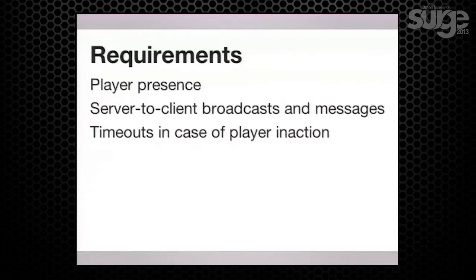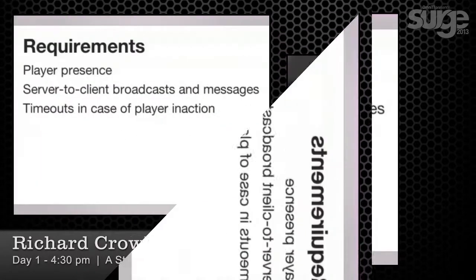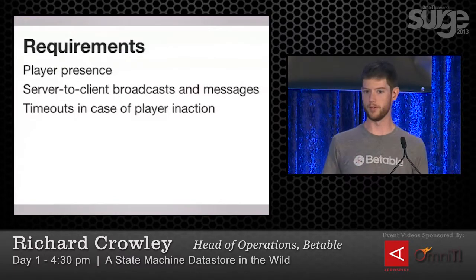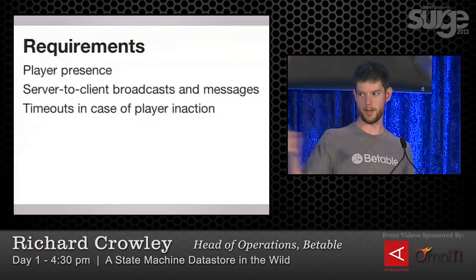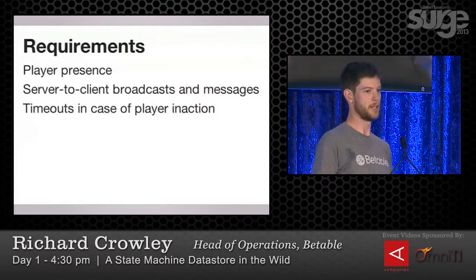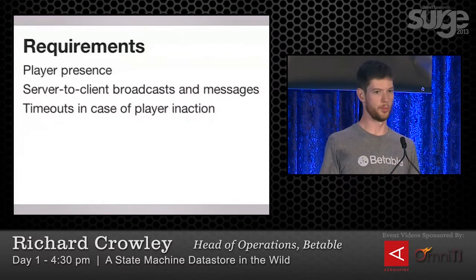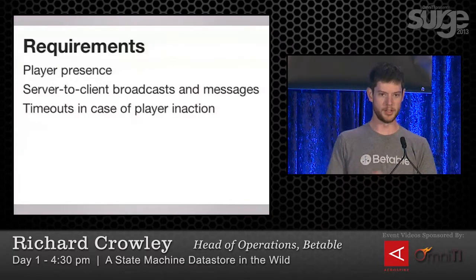We started distilling this down to requirements. The big ones were that we needed some notion of player presence, which we didn't have before. When you're making REST calls, it doesn't matter whether your phone is on the network, but now we need to know if you've left the table so we don't send you events about other players winning. If you're still at the table, we need to alert you when betting opens, when it closes, and what the outcome was. There are server-sent events that are both broadcast — like 'the round is over and the result was seven' — and individual messages like 'your bet was unacceptable' or 'you won 100 pounds.' And there are timeout conditions where after 10 seconds the round closes.